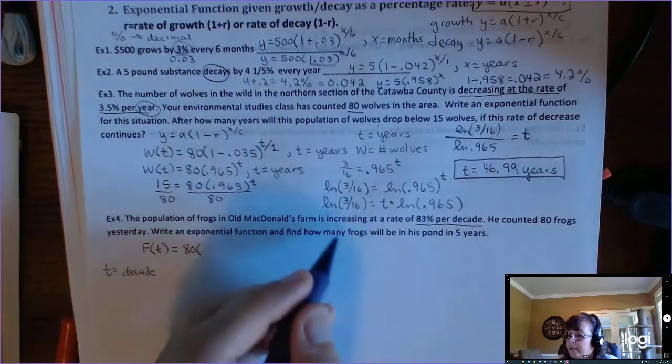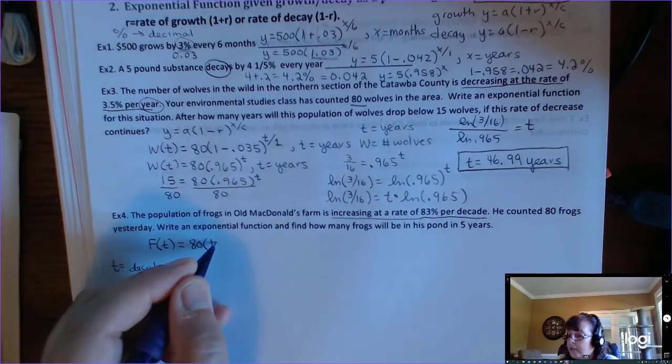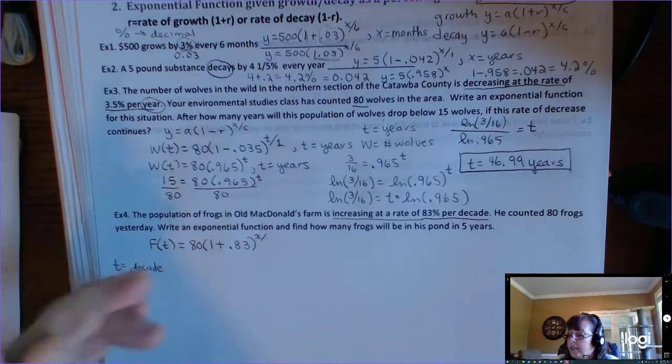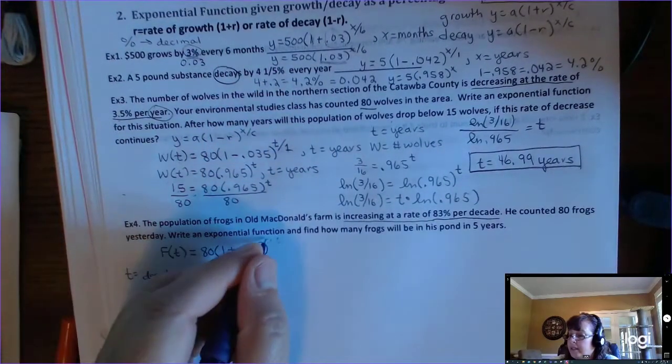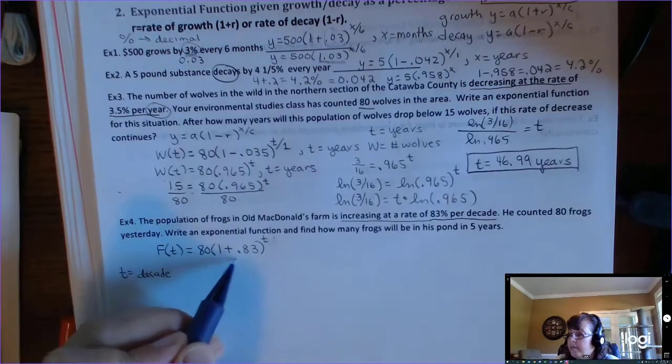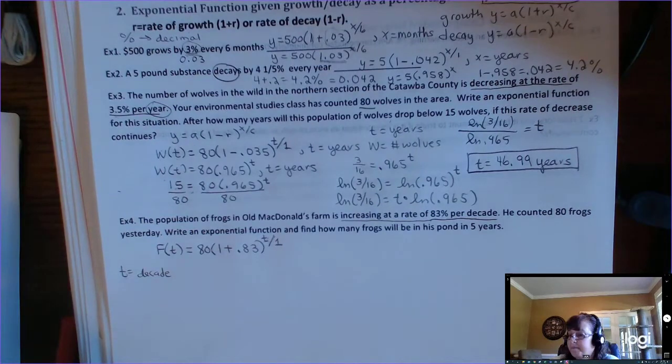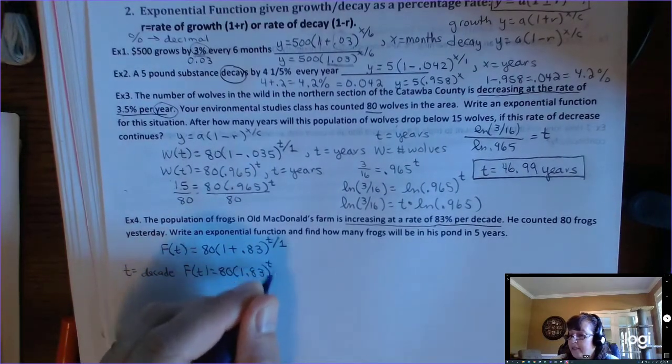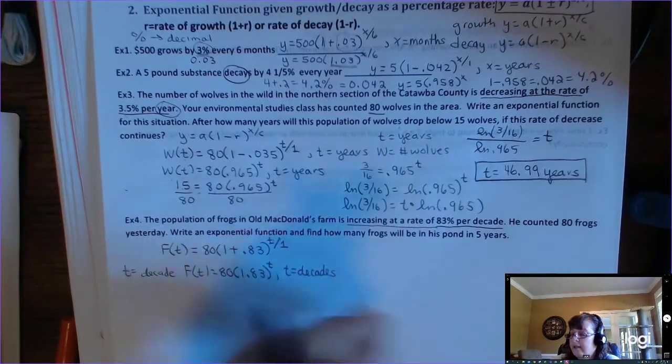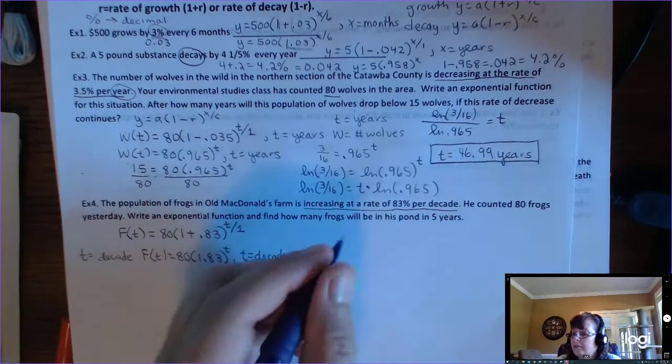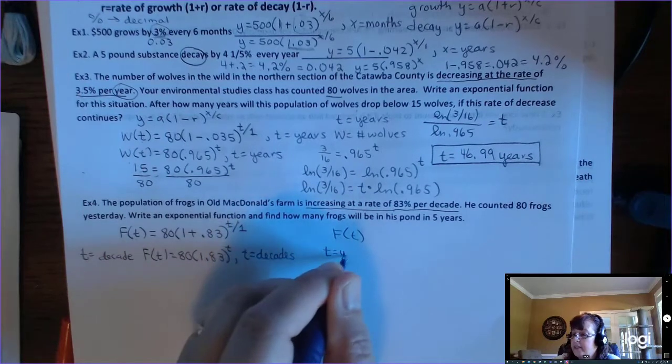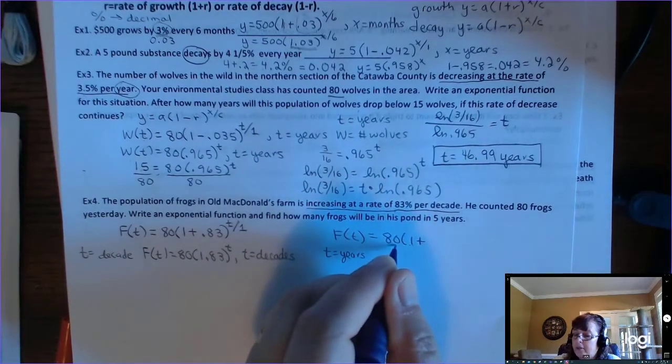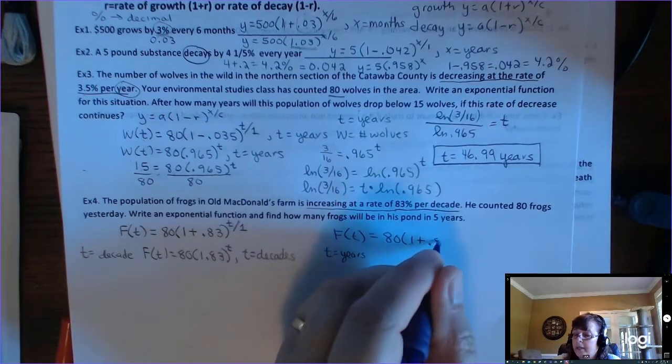So your function, your initial value is 80 frogs. And this time it's increasing. So this is a growth problem at a rate of 83% per decade. So that's 1 plus 0.83 to the x over, well, let's let that be t. You let t be in decades. So when do you get to use that? After one decade. So this function would be 80 times 1.83 to the t where t is in decades. Well, the question is asking you about five years. So you could have done this problem where you said, wait a minute, let's let t be in years. I'm more comfortable with that.